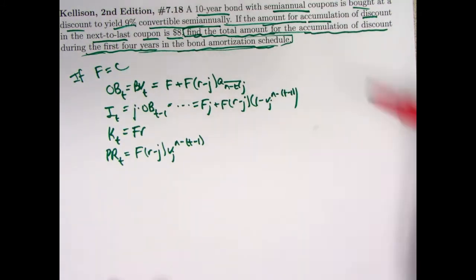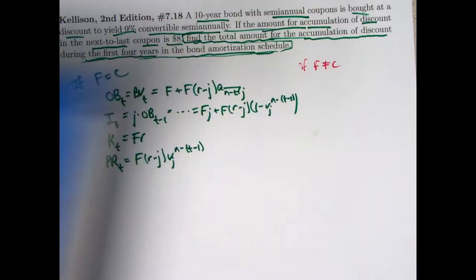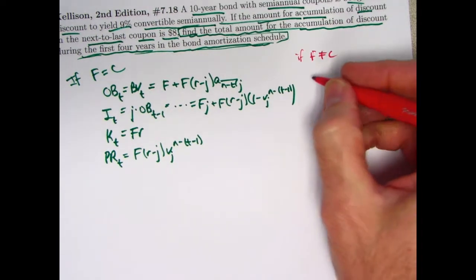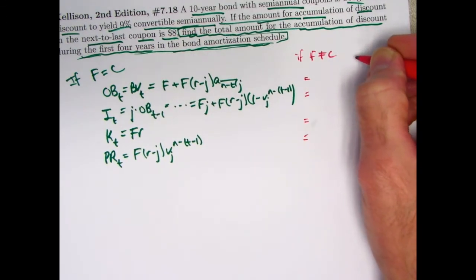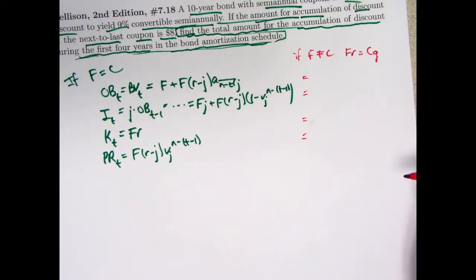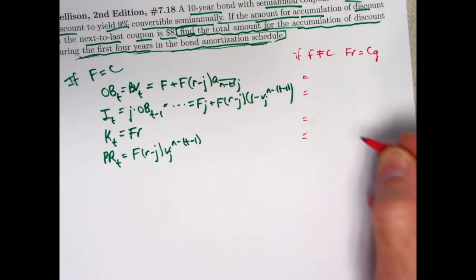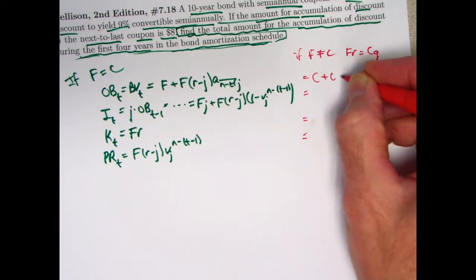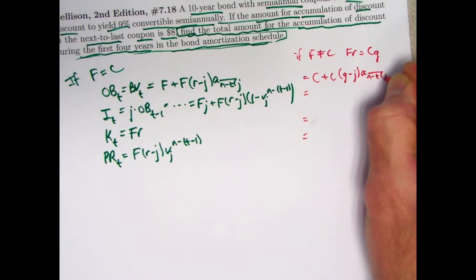But what do you do if the face value and the redemption value are not the same? Again, Broverman's book assumes they are the same, which is the usual case. Kellison's book is a bit more general. In that situation, you can rewrite all these formulas using c instead of f and using the modified coupon rate, which is defined by the equation fr equals cg. So this is the amount of the coupon. If c is the redemption value, little g, the modified coupon rate, is defined to equal, so that c times g equals the coupon amount. Just replace all the f's with c's and replace all the r's with g's. And you'll get equations that work even if the bond is not redeemable at par.